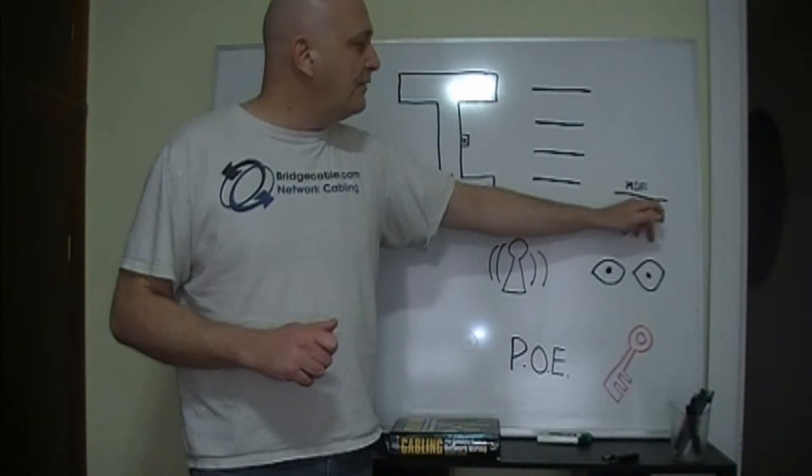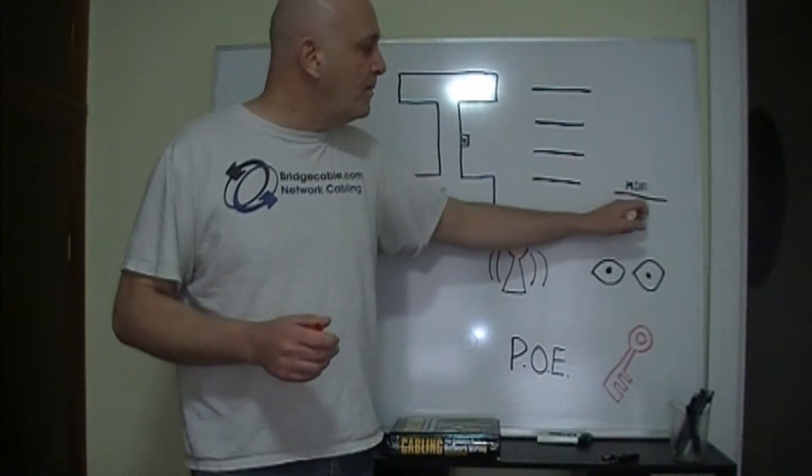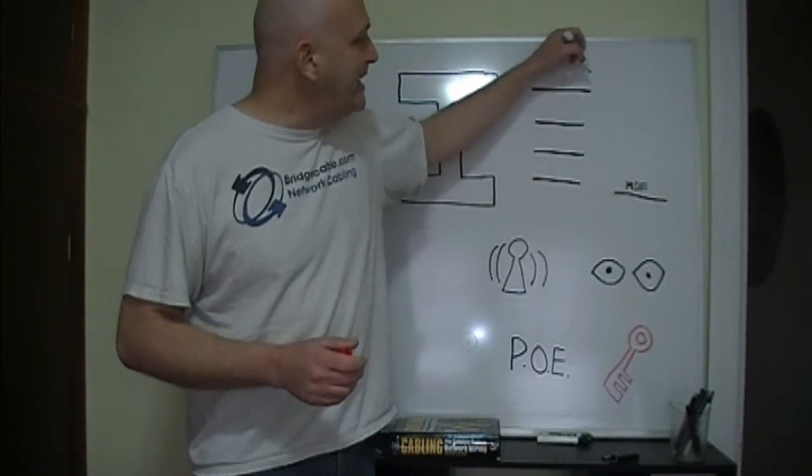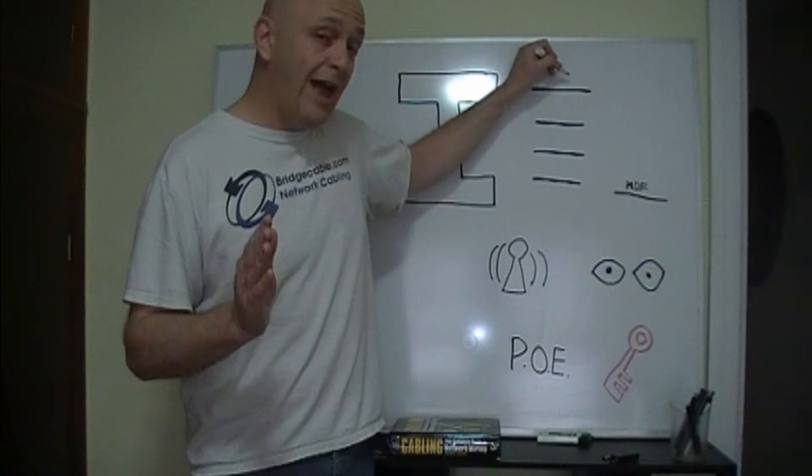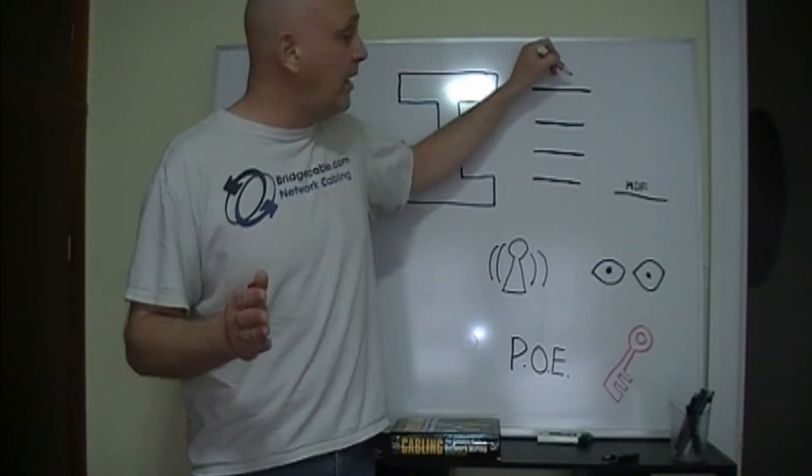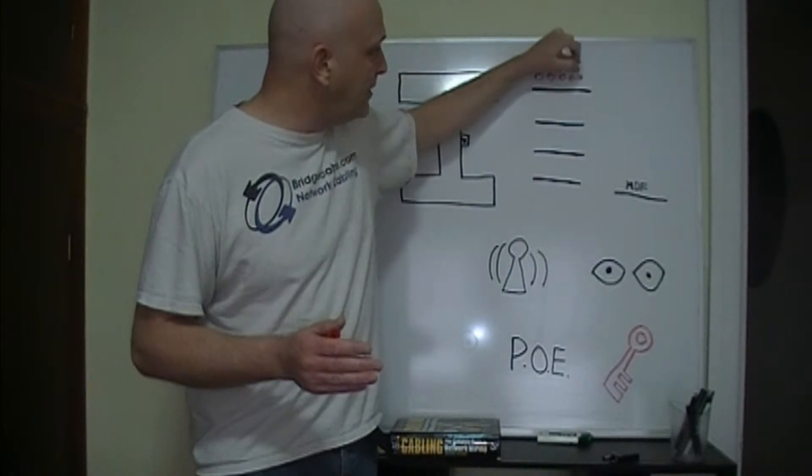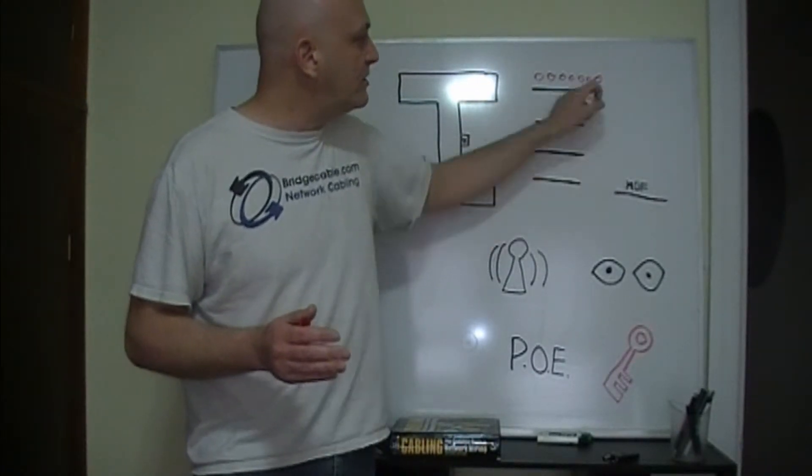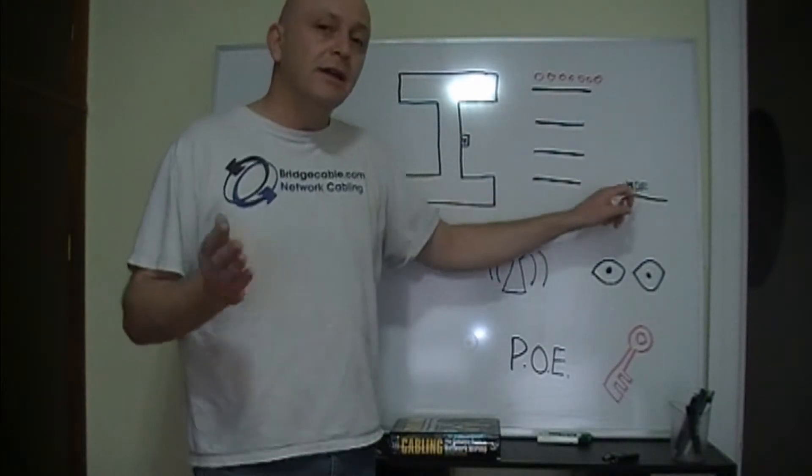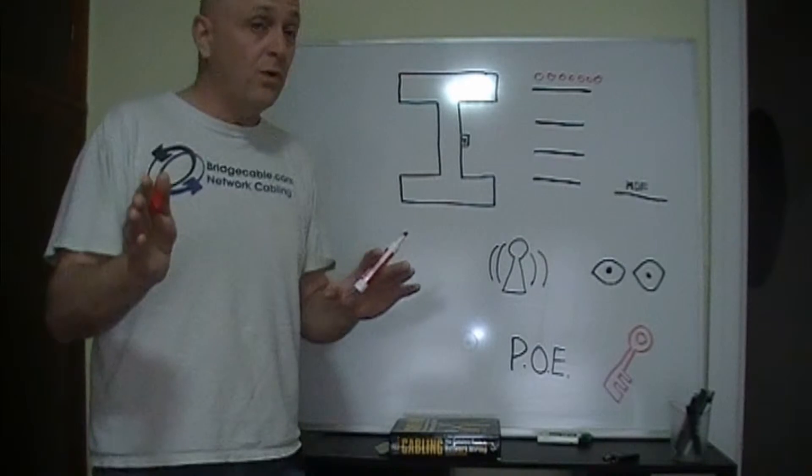So, their server room was on the main floor. One thing that you always want to do, MDF or server room, you want to make sure that each WAP has generally a home run. Now, sometimes in this situation, the Holiday Inn had approximately about eight WAPs on there. To have all those cables going down there, kind of overkill.